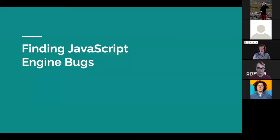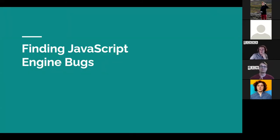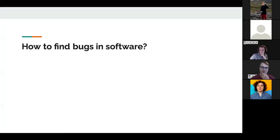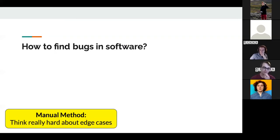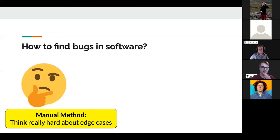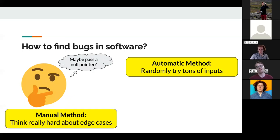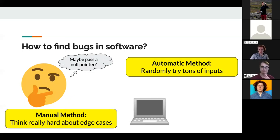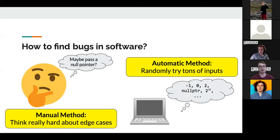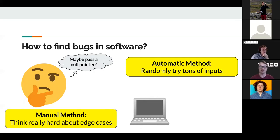Next I want to talk about how you actually find these bugs. It seems weird that you'd just be messing around and find some crazy bug. One way to think about finding bugs is the manual approach — you think really hard and say, 'I'm going to pass a null pointer, this is really going to get them.' Or you could try the automatic method: just try a ton of different things and see if anything crashes the program.